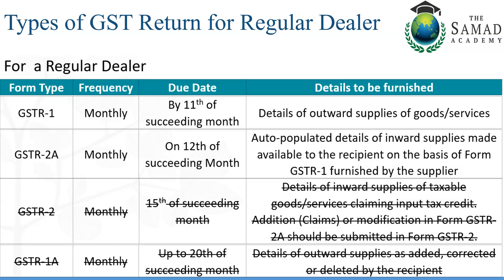GSTR 2A is a report that reflects all purchases you have made from registered dealers — whether goods or services — on your GST portal. In the earlier provision, GSTR 2 return required reconciliation based on GSTR 2A. Any invoices missed by the supplier in GSTR 1 would reflect via GSTR 1A to that supplier. But currently, GSTR 1 is applicable, GSTR 2A is applicable for reconciliation, while GSTR 2 and GSTR 1A are struck off as they are no longer in use.